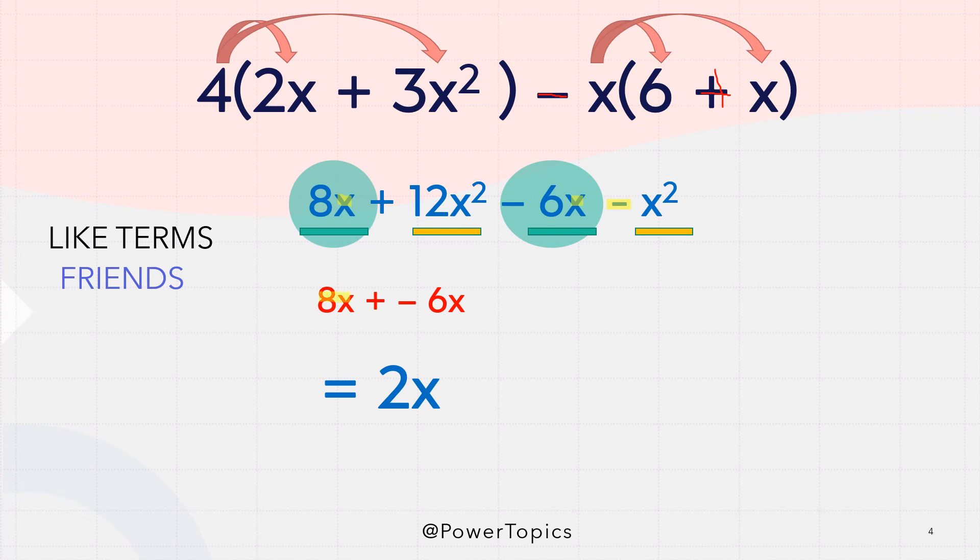So imagine something is positive, 8 positive and you give them or add negativeness by 6. So their positiveness is going to decrease and you get 2x.